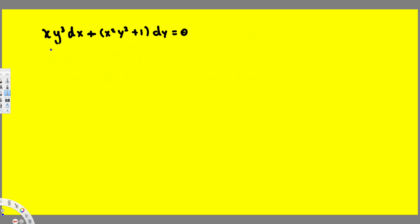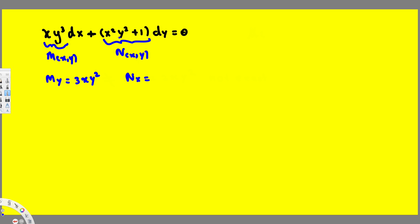Let's go ahead and see whether it is exact. To figure this out, we take M(x,y) and N(x,y), find the derivative of M(x,y) with respect to y, and find the derivative of N(x,y) with respect to x, and see whether both give the same answer. If they do, it's exact. Finding the derivative with respect to y, treating x as a constant, we get 3xy². For N with respect to x, treating y as a constant, we get 2xy². These two are not equal, so this is not exact.